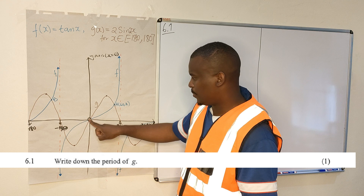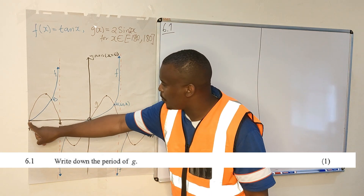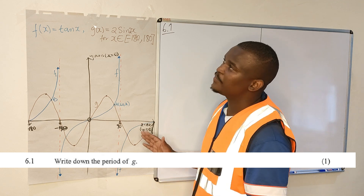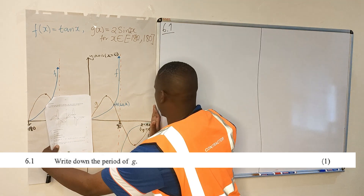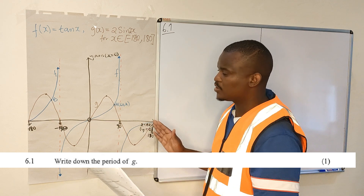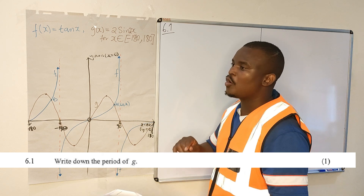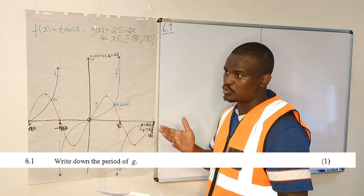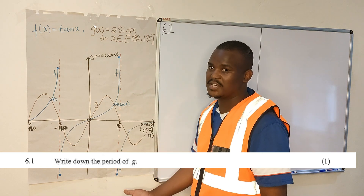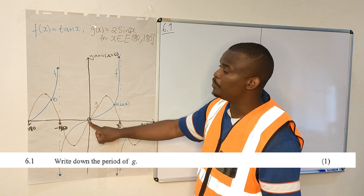It goes down, it goes back up to the original position where it started, and then it repeats again. So it takes from minus 180 to zero to complete, or from zero to 180 to complete. One complete wave is found after 180 units. So the period of a function, especially a periodic oscillating one, is how long it takes for one complete wave to be drawn or completed.